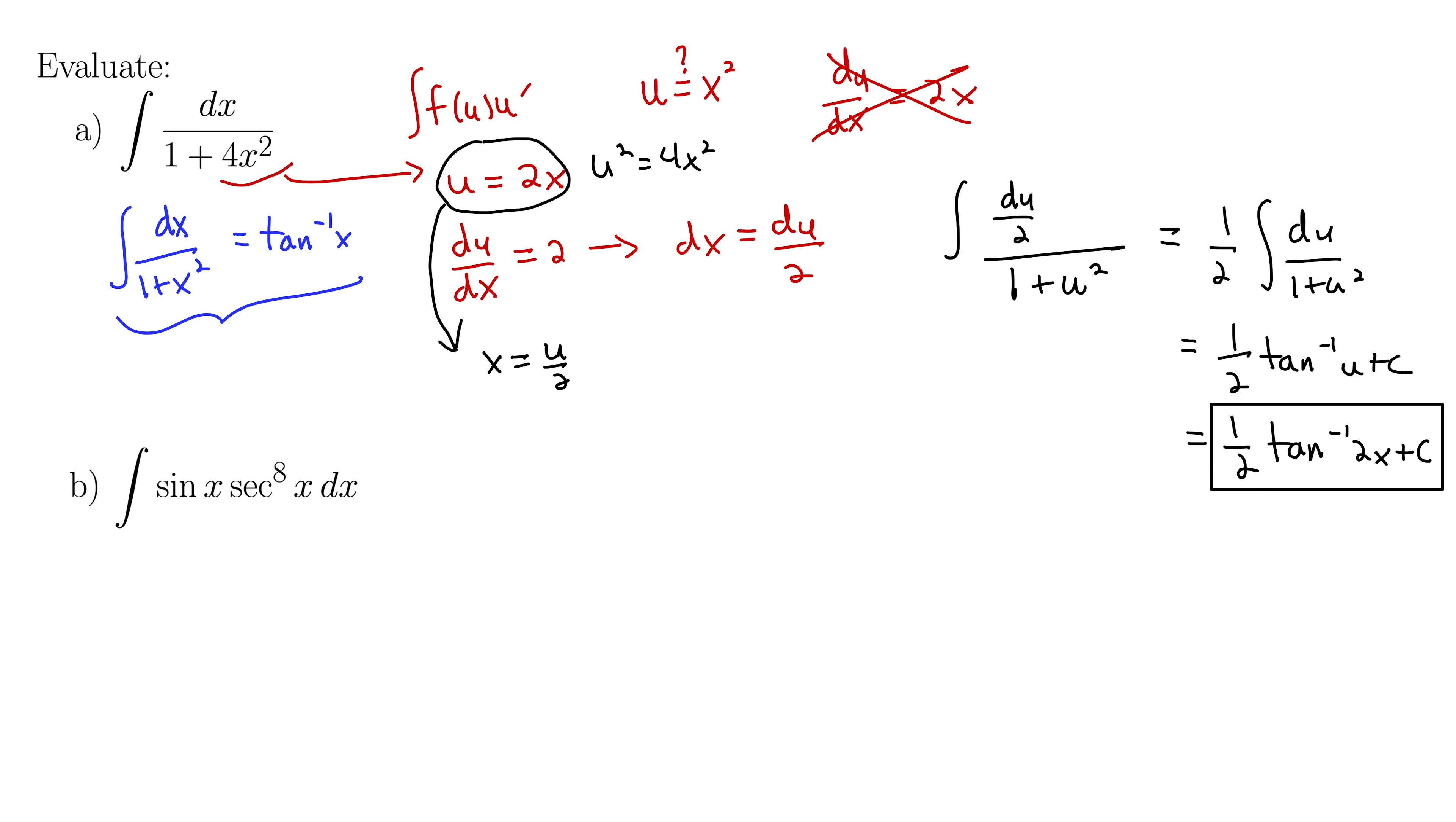Let's take a look at b. We have the integral of sine x times secant to the 8th power of x dx. So again, we're looking for this to be the integral of some function of u with that u prime somewhere outside the function. So I'm thinking this to the power of 8 can be our main function.